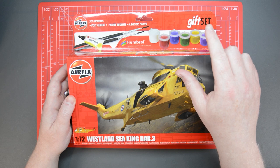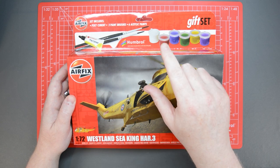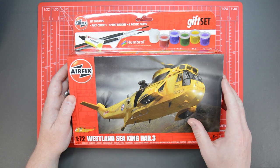Because this is a gift set it comes with the model, the polycement, the paintbrushes and the acrylic paints that you need to build a decent model right from the box.